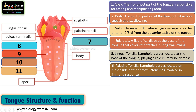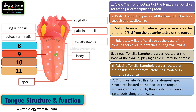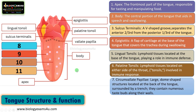The next structure is the vallate papilla, also called the circumvallate papilla. It is a large dome-shaped structure located at the back of the tongue that is surrounded by a trench. It contains numerous taste buds along their walls.